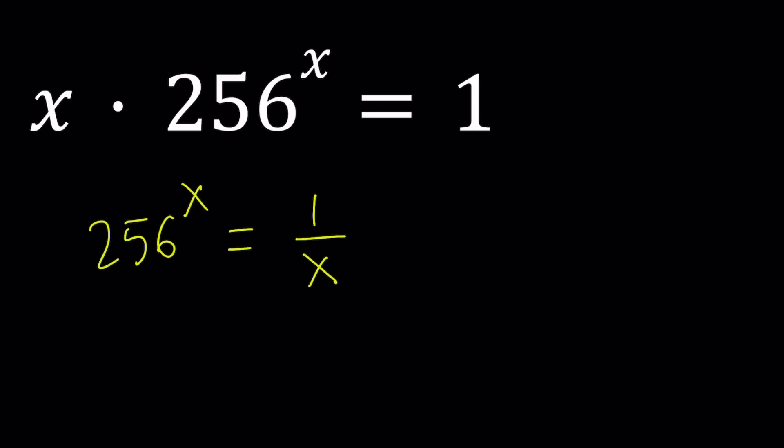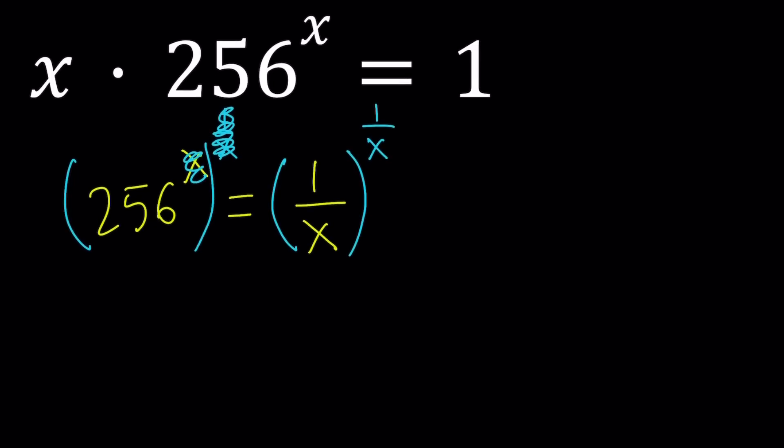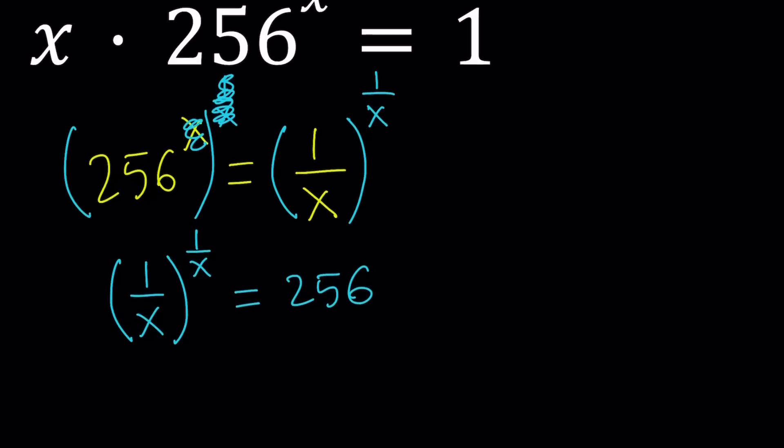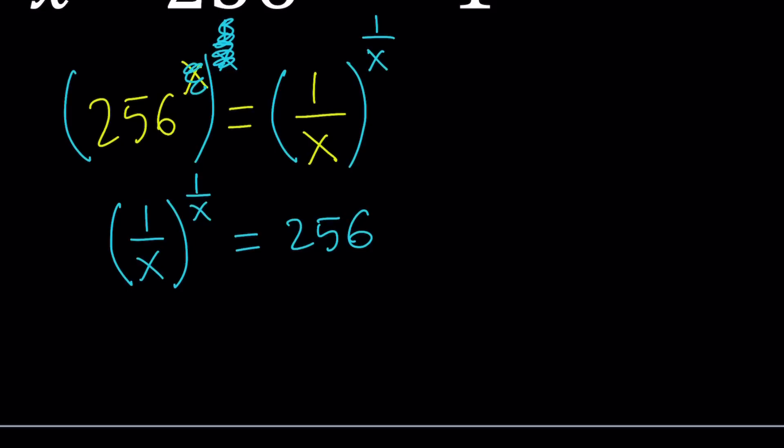Now, notice that I can raise both sides to the power 1 over x, which is logical because that's going to give us something super nice. The base and the exponents will be the same, and x and 1 over x will cancel out. So two good things together. Let's write this 1 over x to the power 1 over x on the left-hand side. Now, this is not very nice unless you write 256 as a to the power a or b to the power b. So we want to get something like a to the a equals b to the b. Make sense?